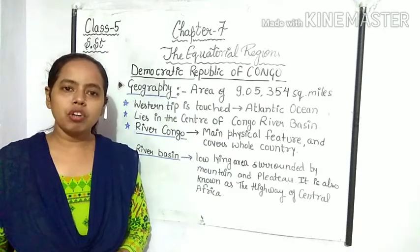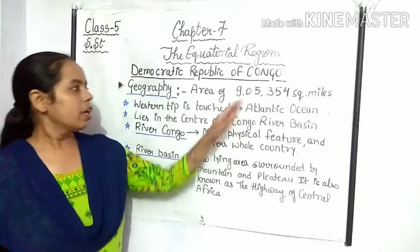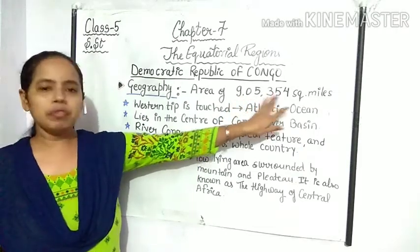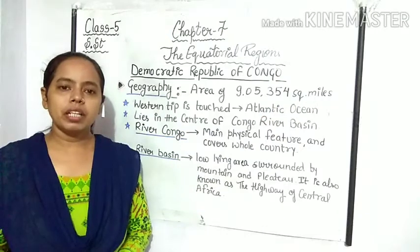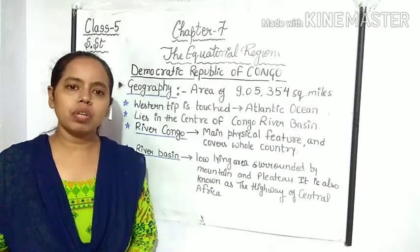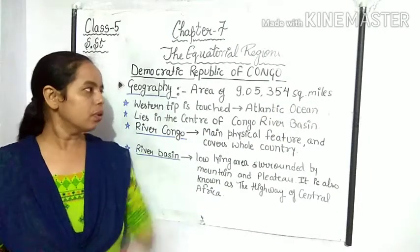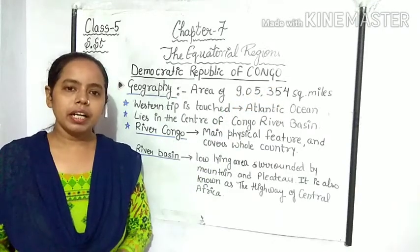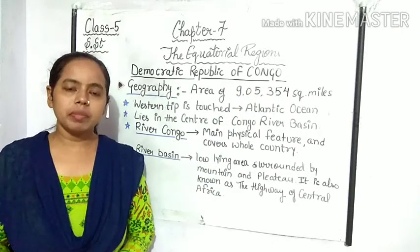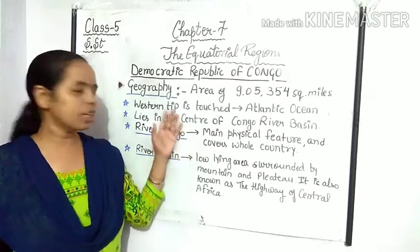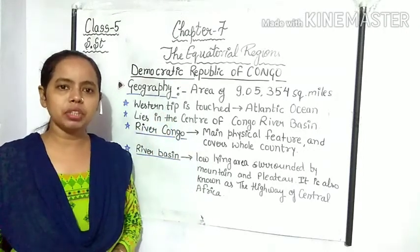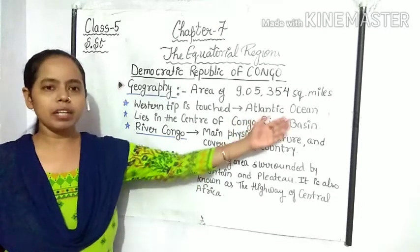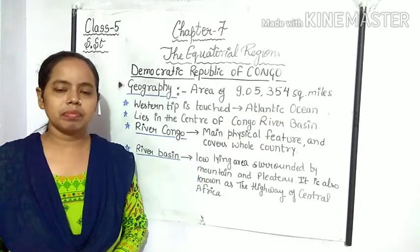The Democratic Republic of Congo has an area of 905,354 square miles. Its western tip is touched by the Atlantic Ocean. इसका जो पश्चिमी छोर है, वो Atlantic Ocean से जाकर मिलता है।